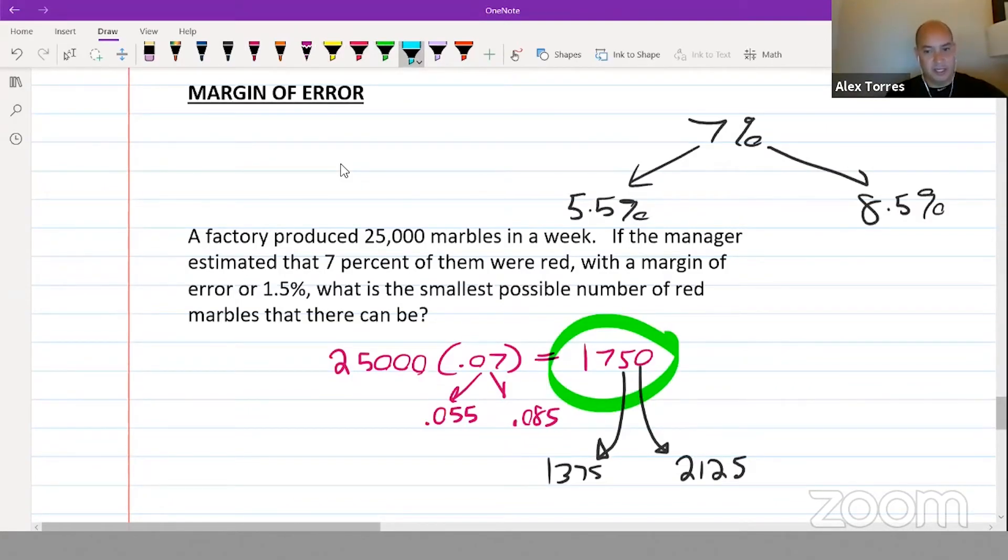It could be as low as 1,375 or as high as 2,125. So the question asks what's the smallest possible number of red marbles, and the answer is the smallest number in that range: 1,375.